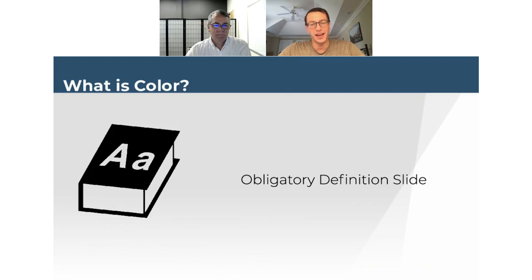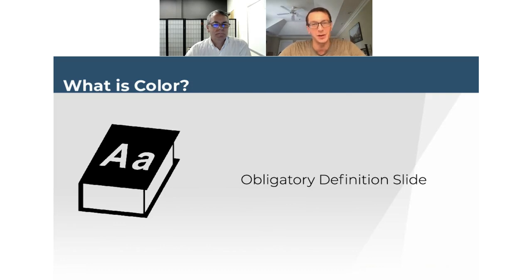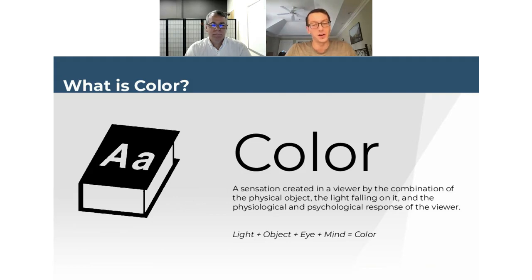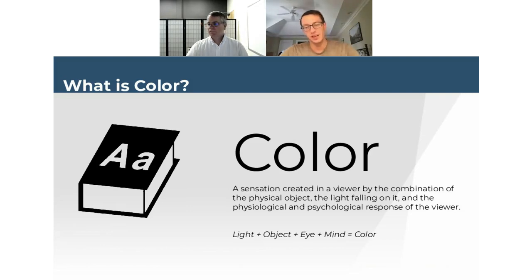Color is a sensation created in the viewer by the combination of the physical object, the light falling on it, and the physiological and psychological response of the viewer. In short, color is the combination of light, the object, your eye, and your mind. My presentation will break down each of those four components, starting with light.